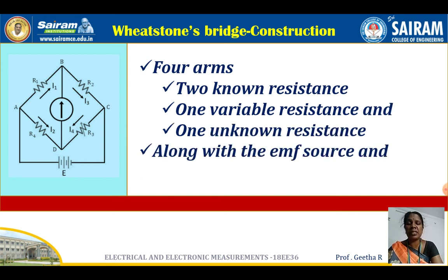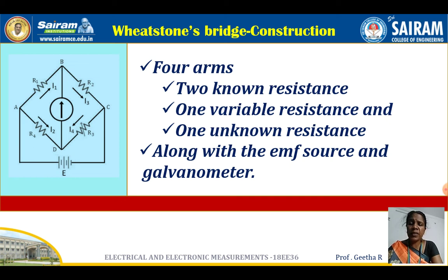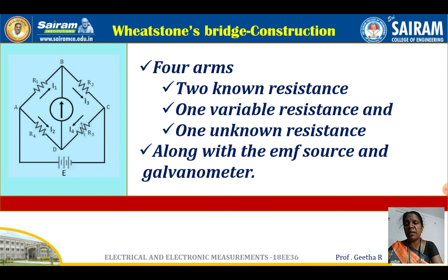In the bridge circuit, you can see two circuits: A-B-D and B-C-D connected in parallel, bridged with the third one A-C where the EMF battery is connected. There are four arms: two arms have two known resistances, one arm has a variable resistance R3, and one arm has the unknown resistance R4. Along with the EMF source and galvanometer, the circuit is constructed.